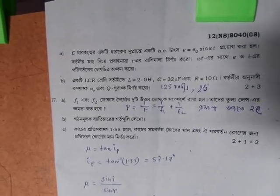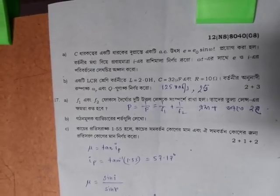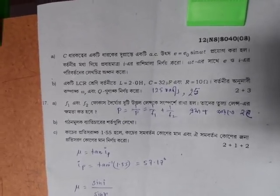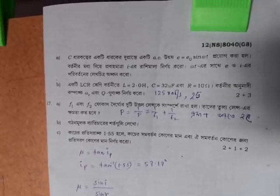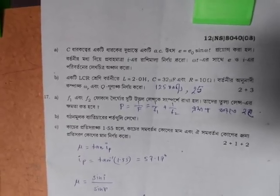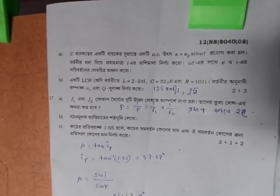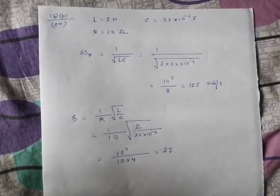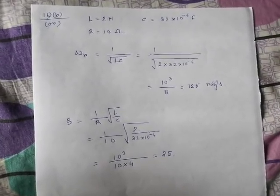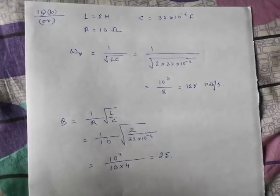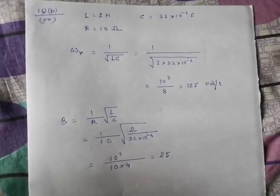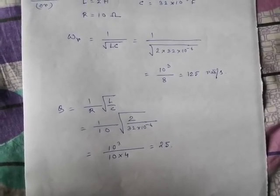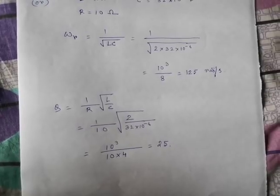The question is LCR. The omega is taken and the Q is taken. The omega formula is taken by √LC, the omega is taken by 1.5 radian per second. The formula is 1 by R times √L by C, which is Q equal to 25.